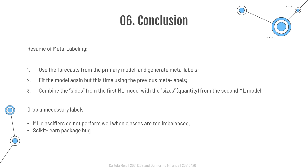Finally, we'd like to address situations when one should drop unnecessary labels. Some machine learning classifiers do not perform well when classes are too imbalanced. In those cases, it is better to drop extremely rare labels and focus on the more common outcomes. Similar to outliers, there is also a known bug in the scikit-learn package from Python. The error stems from scikit-learn's decision to operate with standard NumPy arrays rather than structured arrays or pandas sub-objects.